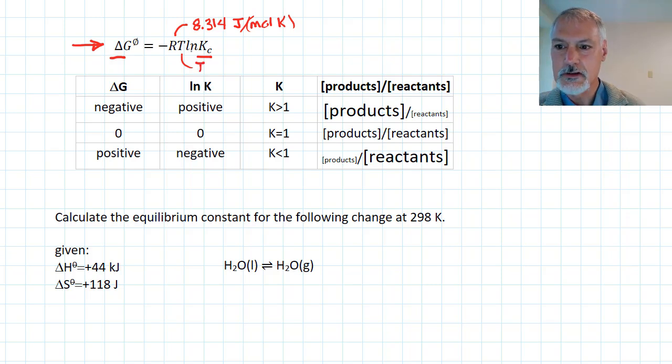This is the natural log of the equilibrium constant. And to use this expression, Gibbs free energy must be in joules in order for this to work. So make sure you convert your kilojoules, which typically you get delta G in, into joules to put it into this expression.